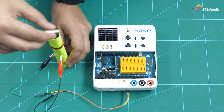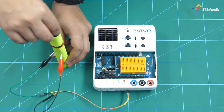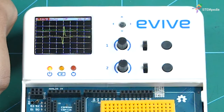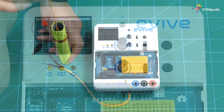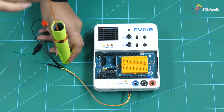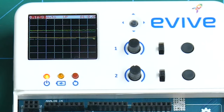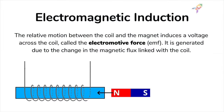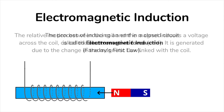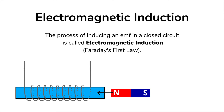Now try dropping the magnet so that the south pole enters the solenoid first. You will notice that this time the graph is reversed. Now hold the magnet stationary — you will observe that no peaks are generated. This indicates that the current is generated in the coil when the magnet moves through it. The relative motion between the coil and the magnet induces a voltage across the coil called the electromotive force, which in turn generates the current.